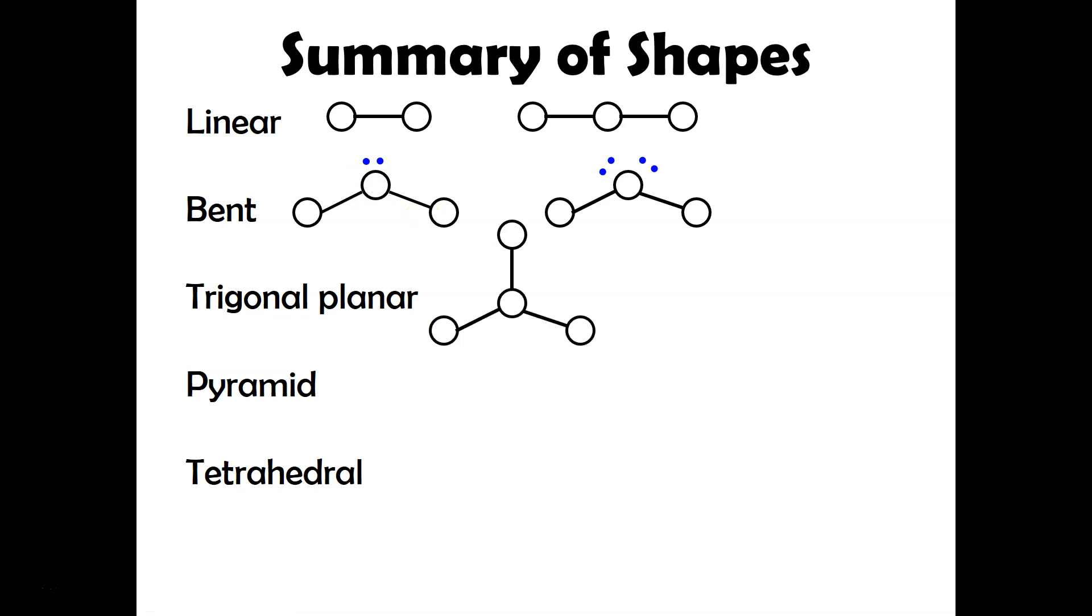For trigonal planar, you would expect to have three atoms bonded to a central atom. This one is planar because the molecule is actually flat. But you'll have more experience with that a little bit later on. Pyramid actually kind of looks like a pyramid. You can see it kind of pushes these downward because of that unshared pair. And then finally, tetrahedral, we think tetris because you have four bonded atoms around it.